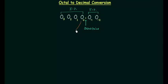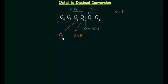I will multiply O0 by 8 raised to power 0. We are multiplying by 8 raised to power 0 because the base in case of octal number system is equal to 8, and the position of this coefficient is 0. Now I will multiply O1 by 8 raised to power 1.